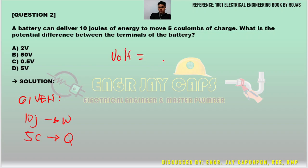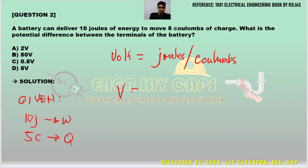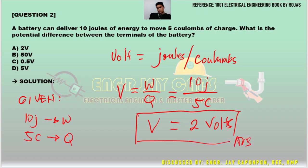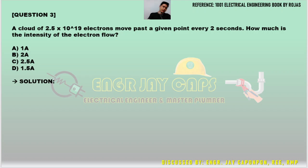Since 1 volt equals 1 joule per coulomb, by this unit analysis we arrive at the formula: V equals Work over Q. Plugging in the given values: V equals 10 joules over 5 coulombs, giving us 2 volts. The final answer is letter A — 2 volts.